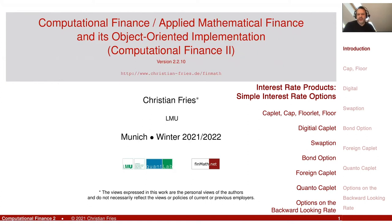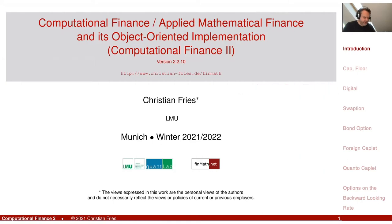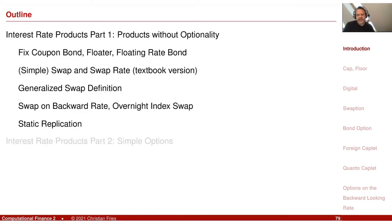Welcome back to Applied Mathematical Finance and Computational Finance. We are still discussing interest rates and interest rate products. We completed our section on products without optionality. I sometimes call these linear products — a financial product where some index enters in a natural and linear way.